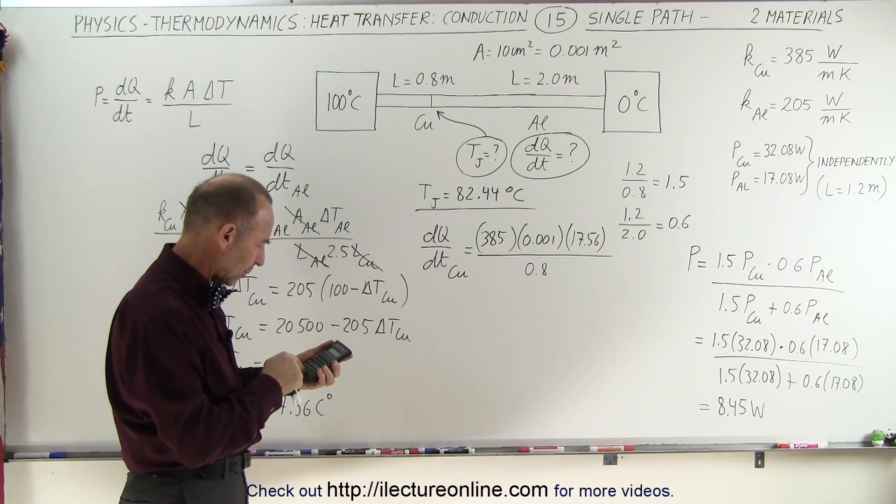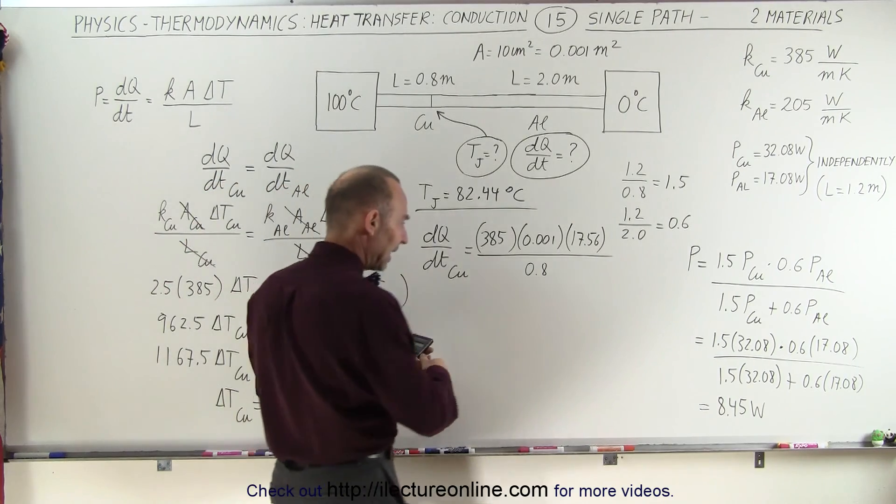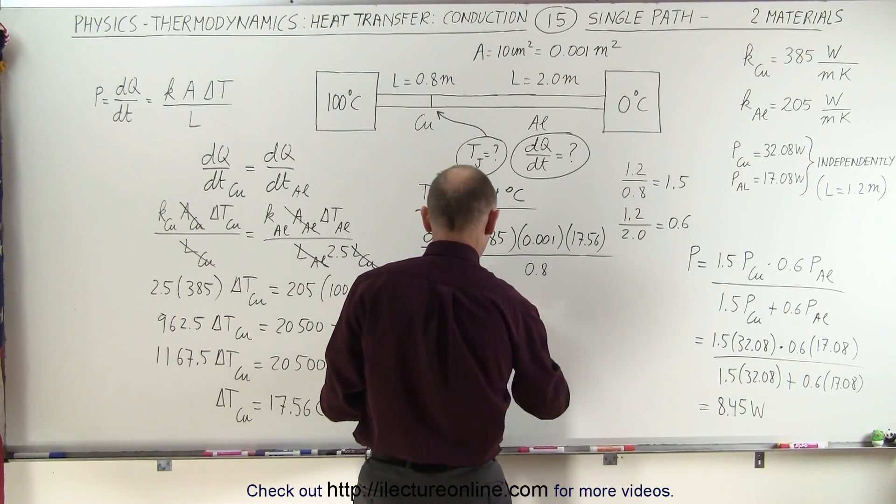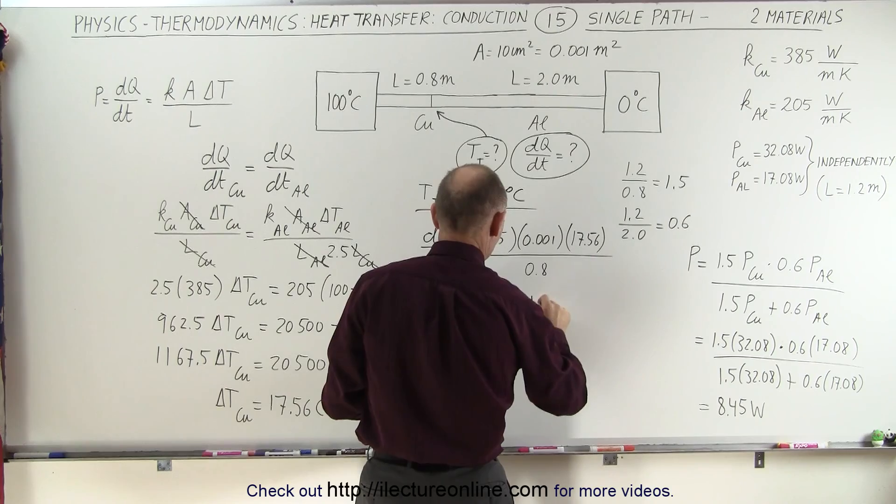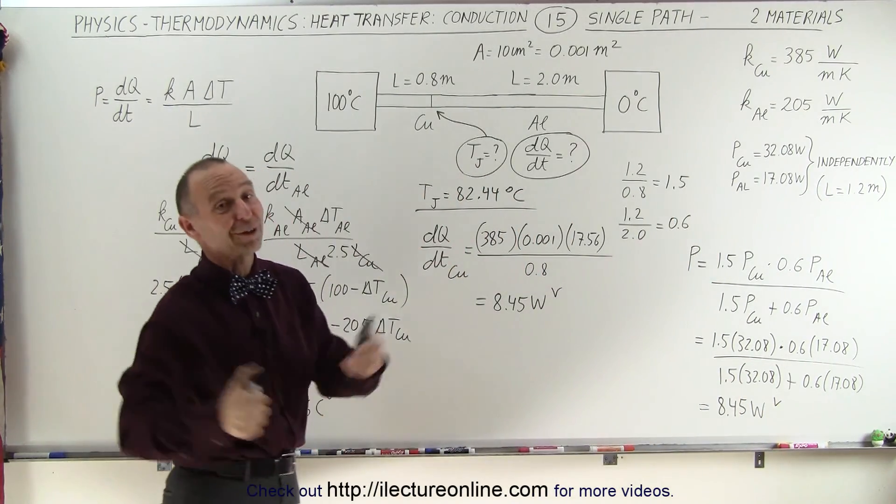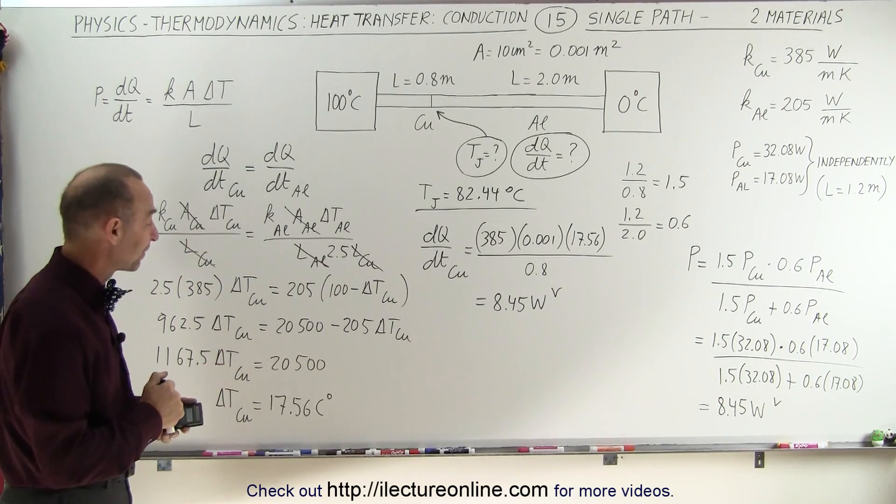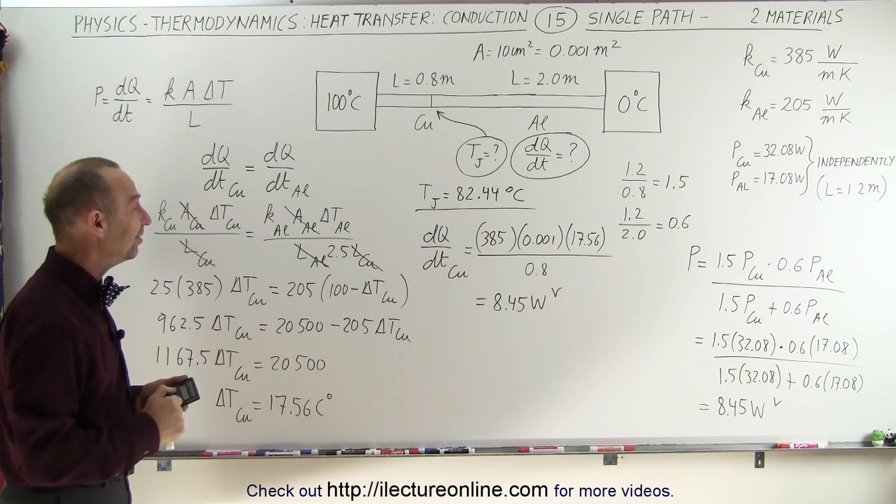So times 0.385 divided by 0.8 equals, and we get 8.45, which of course is the same that we got over there. Well, not necessarily of course, because I do make mistakes sometimes, quite often actually. But in this case we didn't, and the two answers are exactly the same.